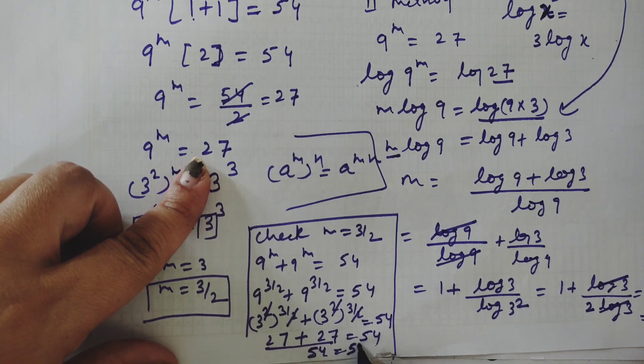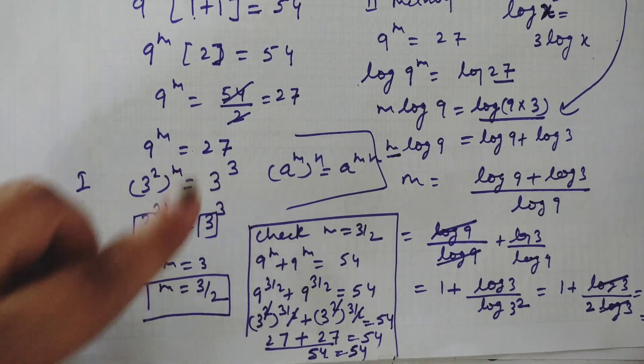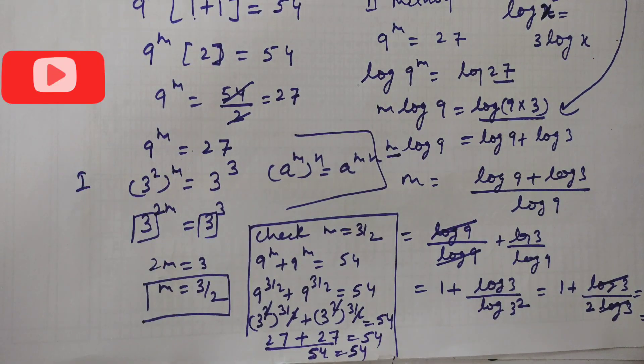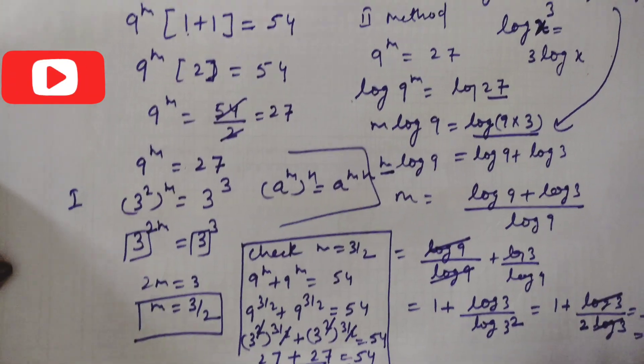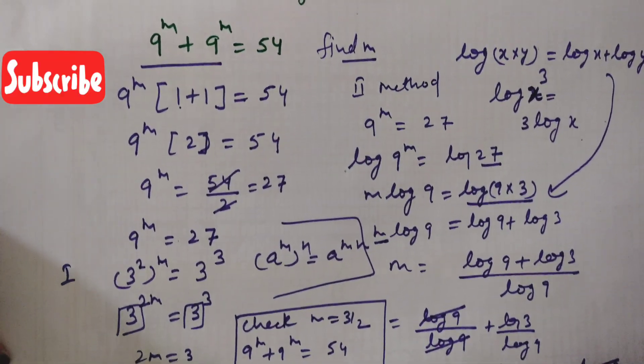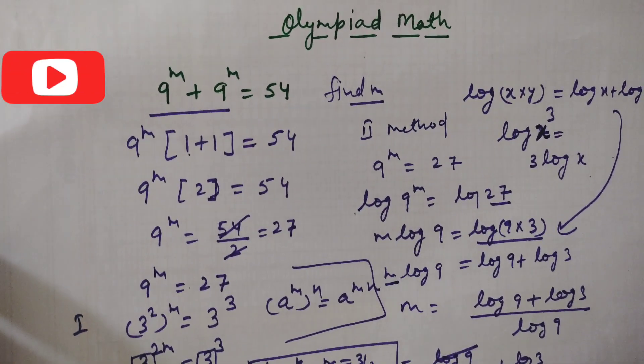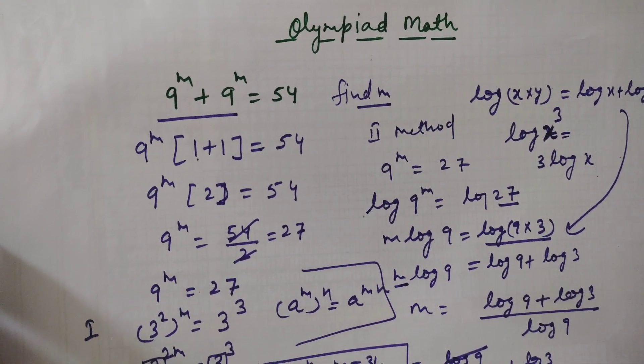The left hand side equals the right hand side, confirming that our m value of 3 by 2 is correct. Hope you understood this question. If you like this video, please like, share, and subscribe to my channel. Thank you for watching.